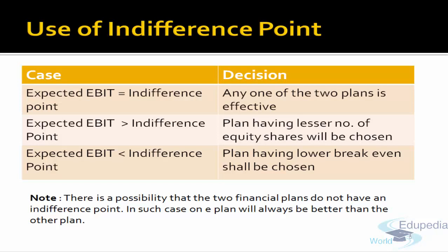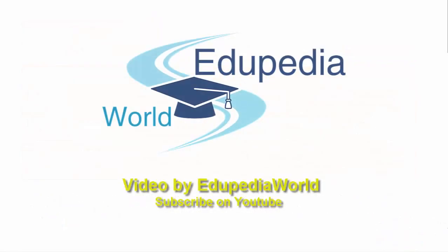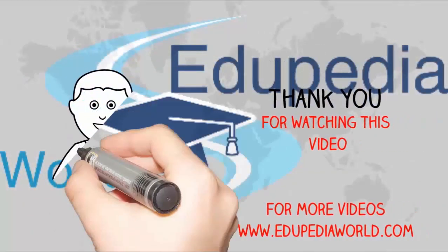But there could be a scenario where the two projects do not have any indifference point — that is, there is no point at which the earning per share from either of the two plans is the same. In such cases, one plan is always better than the other, and the plan which has the highest EPS is chosen by the company. That's all.